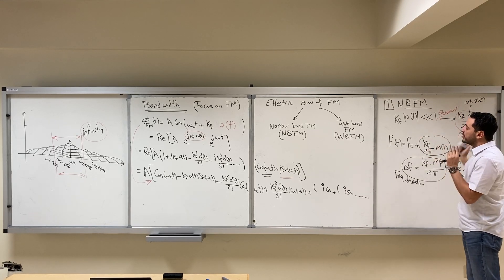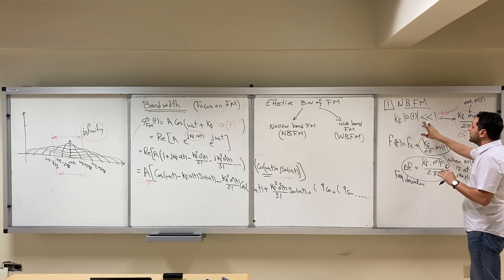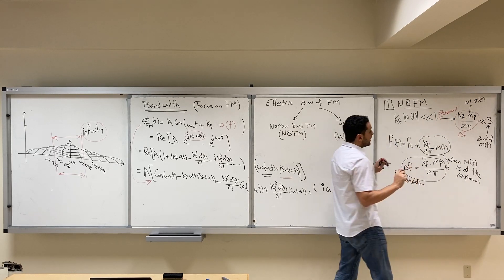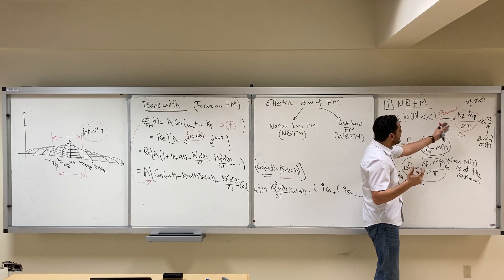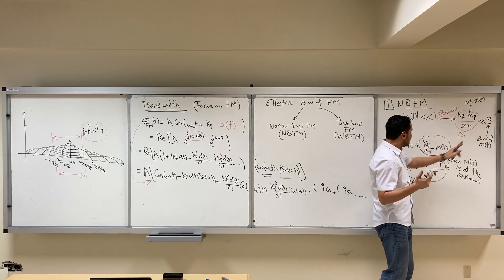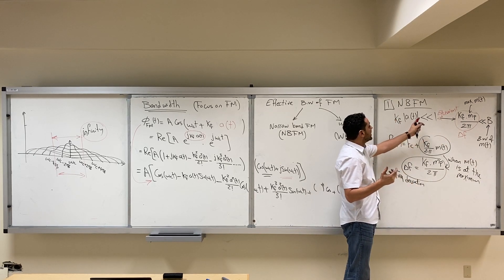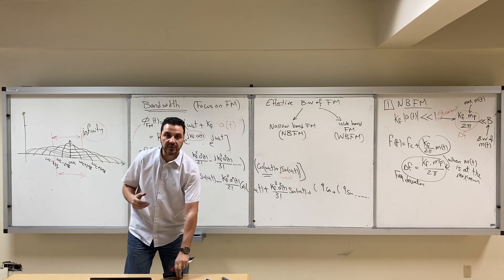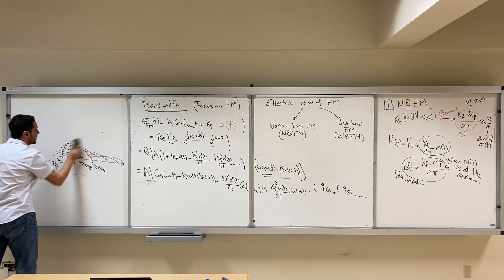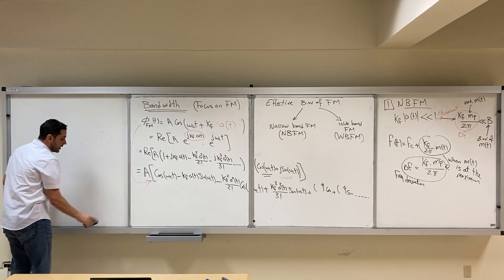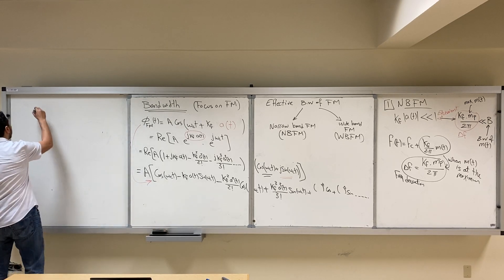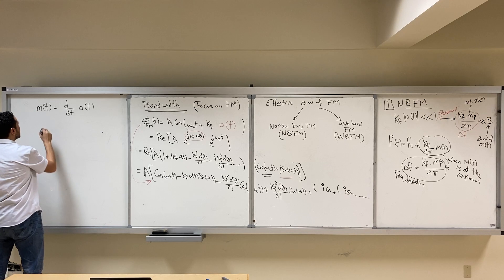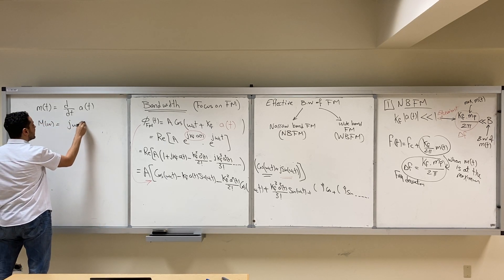These two conditions are equivalent to each other, and I will prove it quickly. Whenever one is satisfied — delta F less than B, or Kf·A(t) much less than 1 — we say this is narrowband FM. We know that M(t) is the differentiation of A(t), so we can say M(ω) = jω·A(ω), where ω is the frequency of our spectrum.